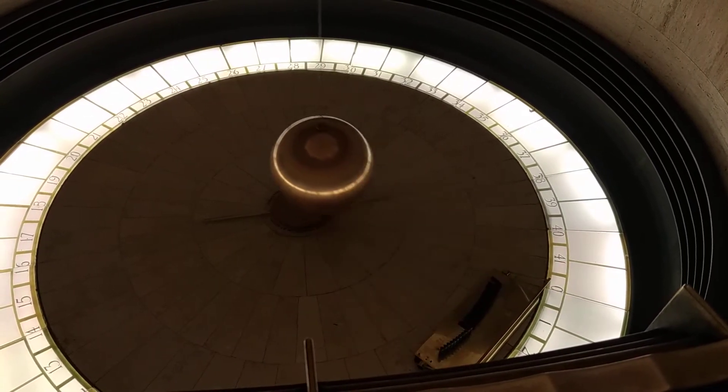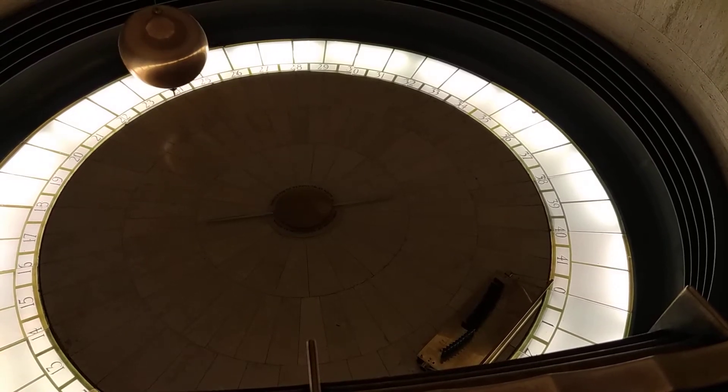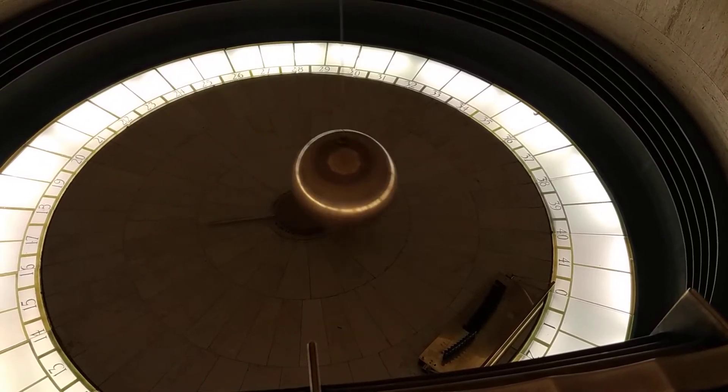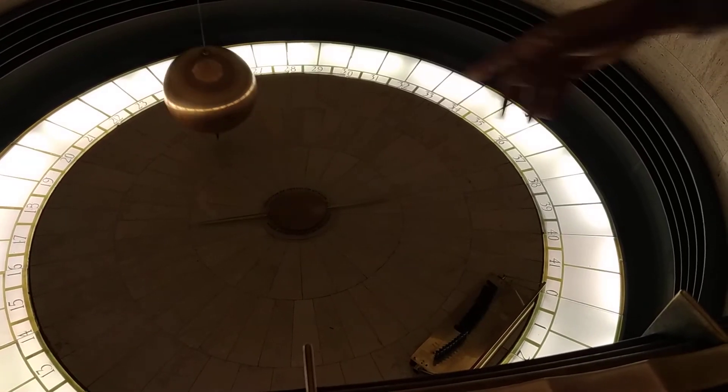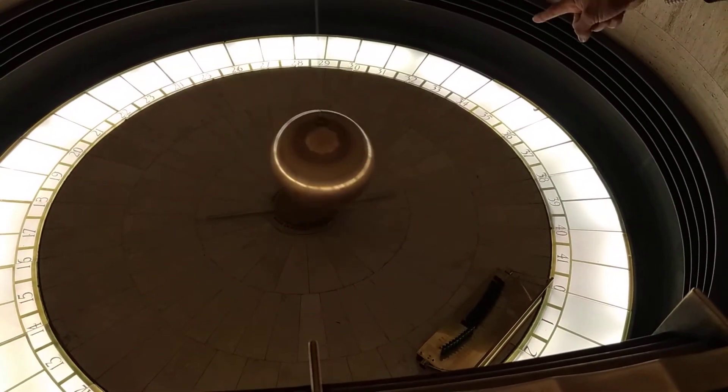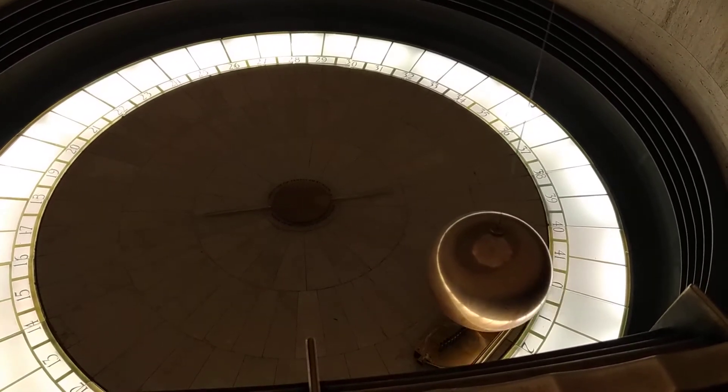We're rotating in this direction. So this ball goes back and forth, and as it goes back and forth, the Earth rotates. And as the Earth rotates, it's bringing those pegs into the path of that ball.